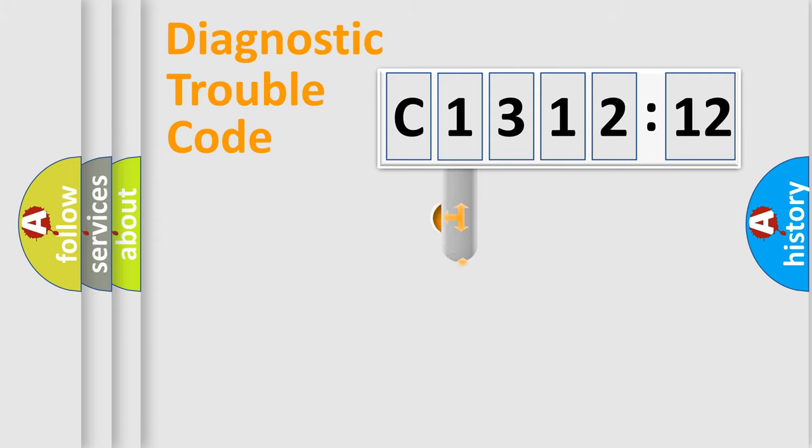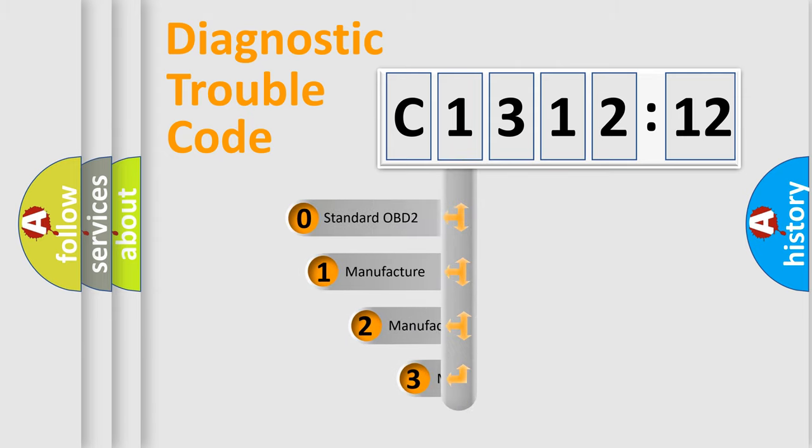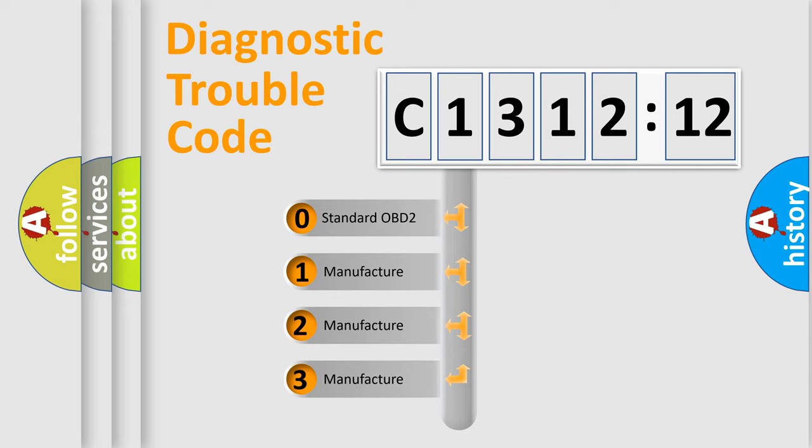Powertrain, Body, Chassis, Network. This distribution is defined in the first character code.